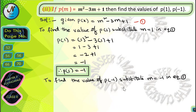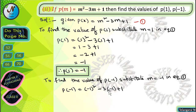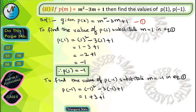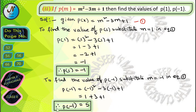To find the value of p(-1), substitute m is equal to minus 1 in equation 1. After substituting, we get p(-1) is equal to minus 1 whole square minus 3 into minus 1 plus 1. After simplification, minus 1 whole square is plus 1, minus 3 into minus 1 is plus 3, so we get 1 plus 3 plus 1 equals 5. Therefore, p(-1) is equal to 5.